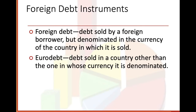Foreign debt instruments: foreign debt — debt sold by a foreign borrower but denominated in the currency of the country in which it is sold. So if it's sold in the U.S., it's in U.S. dollars; if sold in Japan, you'd use the Japanese yen; in Europe, the euro. The most common currency in the world is the U.S. dollar. Eurodollar debt — debt sold in a country other than the one in whose currency it is denominated.